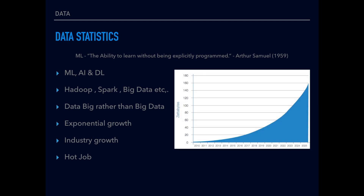AI is a big umbrella — under AI we have machine learning, and then deep learning. Nowadays we are getting a huge amount of data from social media, media sites, etc. According to predictions, by 2025 we will have around 160 zettabytes of data. That's why everyone is looking into Spark, Hadoop, and big data concepts, which are growing in the market.